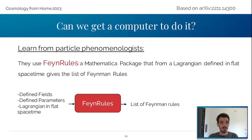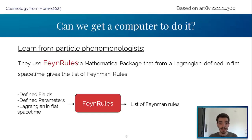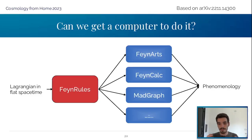Let's learn from particle phenomenologists and use FeynRules. FeynRules is a Mathematica package that takes a model file where you define the fields, the parameters, and the Lagrangian, and it gives you the list of Feynman rules. When you have many, many terms it is very tricky to do all of this by hand. The best thing about FeynRules is that many compatible packages have been created: FeynArts allows you to create all the different diagrams, FeynCalc calculates scattering amplitudes, and MadGraph even calculates cross sections. It is very helpful and key to doing phenomenology with beyond-standard-model theories.